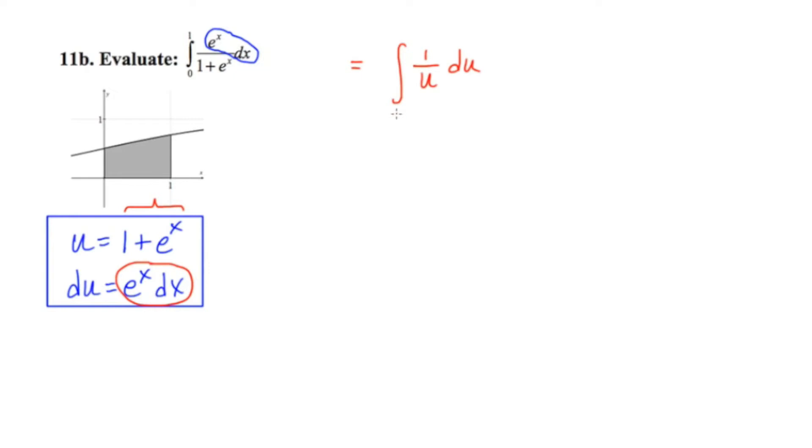e to the 0 is 1, and 1 plus 1 is 2, so our new lower limit is 2. And our old upper limit was 1, and e to the 1 is e, so our new upper limit is 1 plus e. That's a little bit weird, but that's in fact what the new upper limit is.